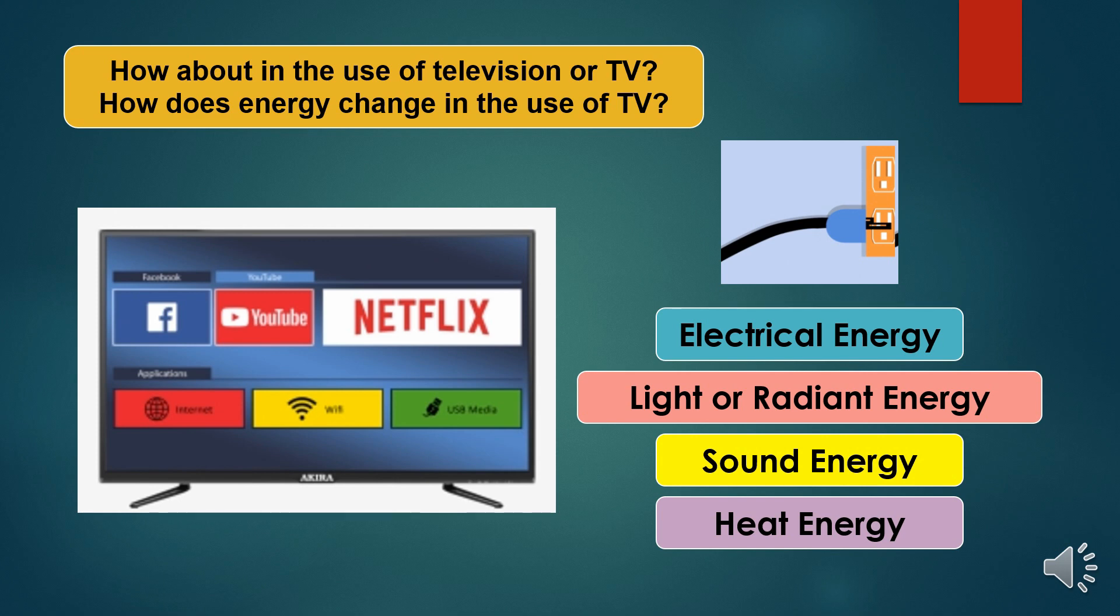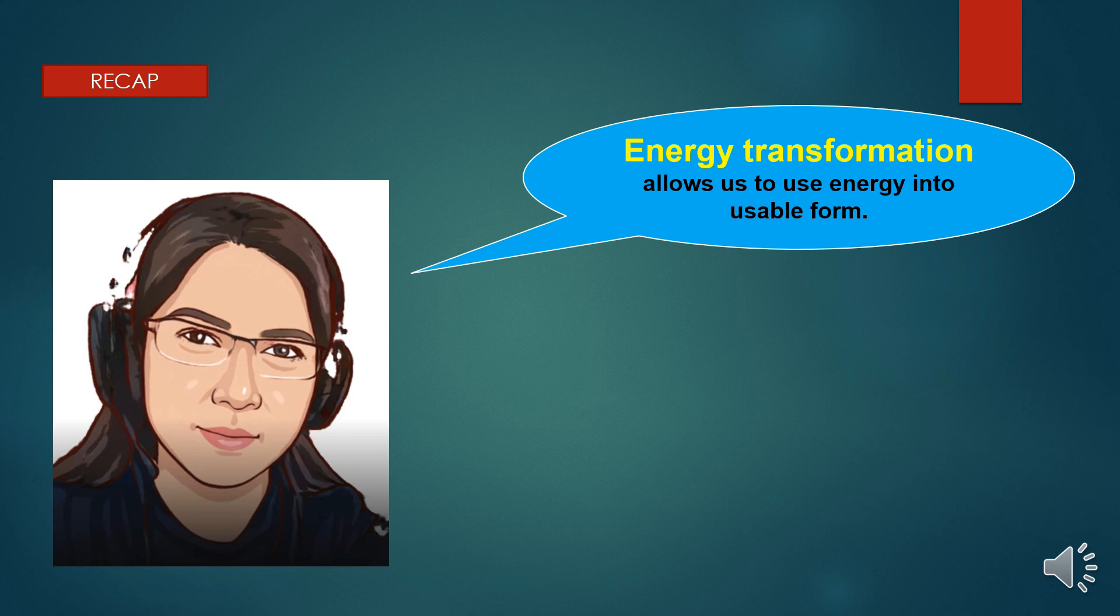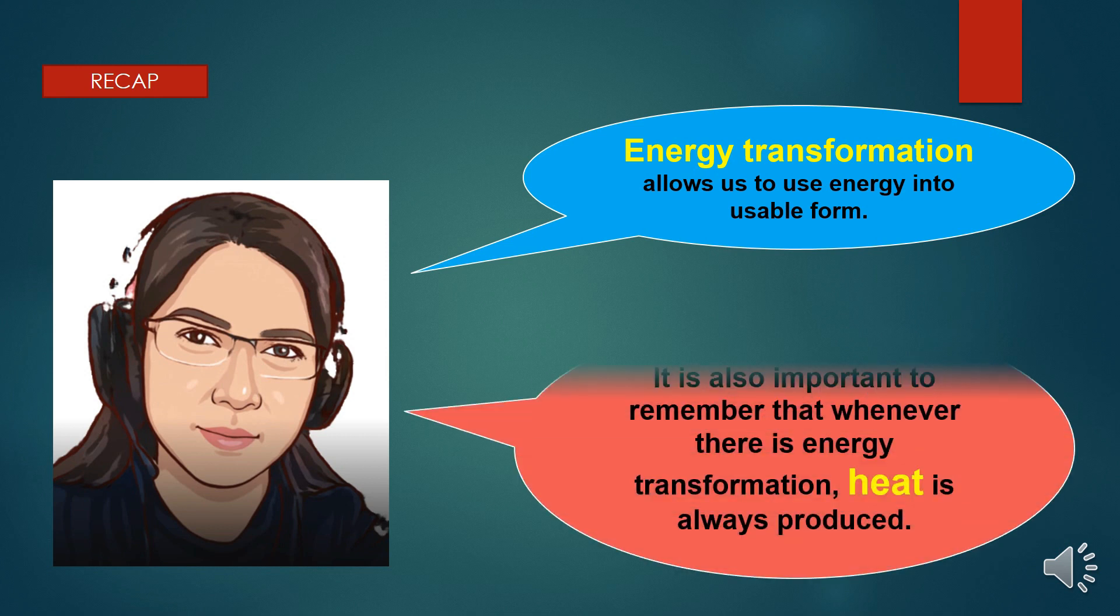Then, electrical energy is changed into light or radiant energy, then into sound energy, and into heat or thermal energy. Energy transformation allows us to use energy into a usable form. It is also important to remember that whenever there is energy transformation, heat is always produced.